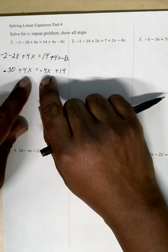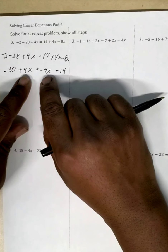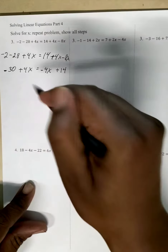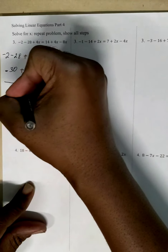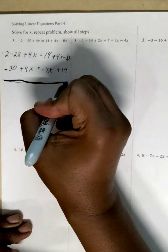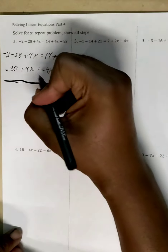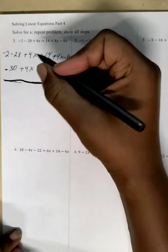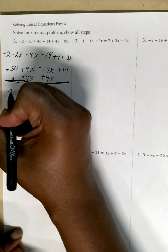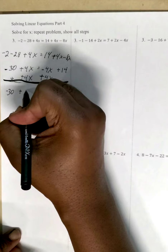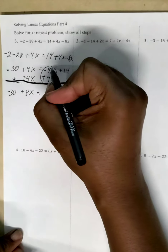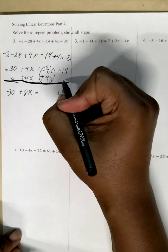Now we have x's on both left and right sides. We have 4x on the left and negative 4x on the right. The weaker of the two is the right side negative 4x, so we're going to put a plus 4x there. And what we do to one side we do to the other, so another plus 4x on the left. The negative 30 comes down, these two become 8x — same signs add — equals comes down, this becomes zero, and 14 comes down.